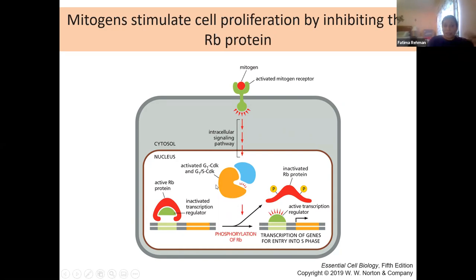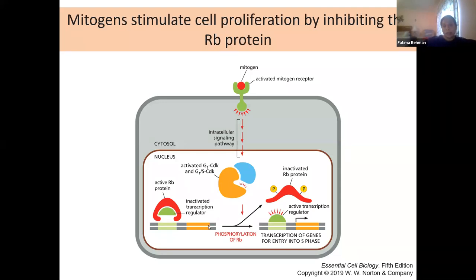When the cyclin E-CDK2 complex comes in, one of the things it does is phosphorylate the origin recognition complex so that another helicase cannot come in and bind to it. This phosphorylation essentially triggers helicase to get dissociated from the complex, start working, unwinding the DNA and starting replication. Once replication is finished, it can't go back and bind anymore because it is already phosphorylated.